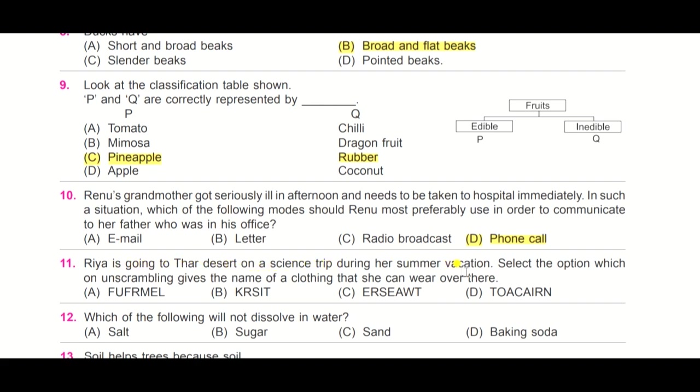Question number 11: Ria is going to Thar desert on a science trip during her summer vacation. Select the option which on unscrambling gives the name of the clothing that she can wear over there. We have to unscramble the word here. It will give you a name of the cloth or clothing or type of clothes she can wear in the Thar desert. Now you need to identify the correct answer, option A, B, C, and D. And the answer is B. When you unscramble it, it becomes skirt, because in Thar desert it is very hot, so she can wear skirt over there.